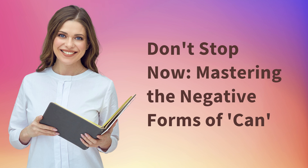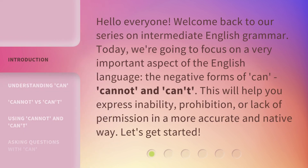Mastering the negative forms of can. Hello everyone, welcome back to our series on intermediate English grammar. Today, we're going to focus on a very important aspect of the English language: the negative forms of can — cannot and can't. This will help you express inability, prohibition, or lack of permission in a more accurate and native way. Let's get started.